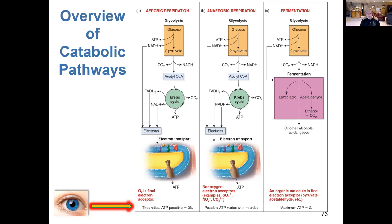What we want to do for the rest of Chapter 8 today is talk about fermentation. In that far right-hand column, you'll note that fermentation does not have two processes that the other two have. There's no Krebs cycle or citric acid cycle, and there's no electron transport in fermentation. So it's a much more simplistic process — not to say the biochemistry isn't complicated, but it's not as involved as the other two mechanisms. The final electron acceptor in fermentation is typically some sort of organic compound.